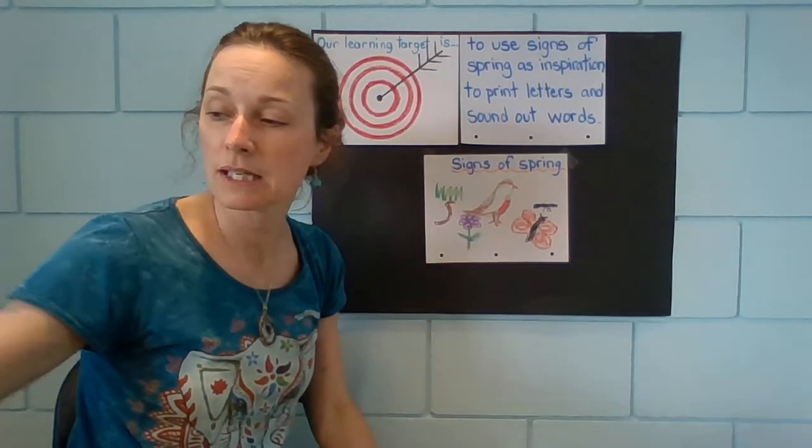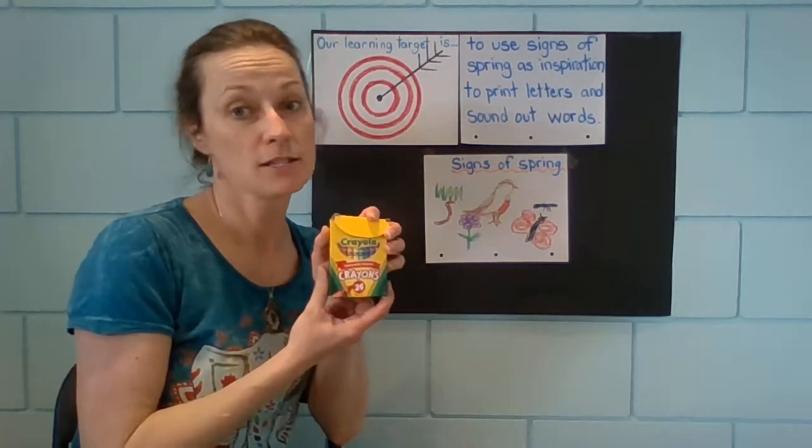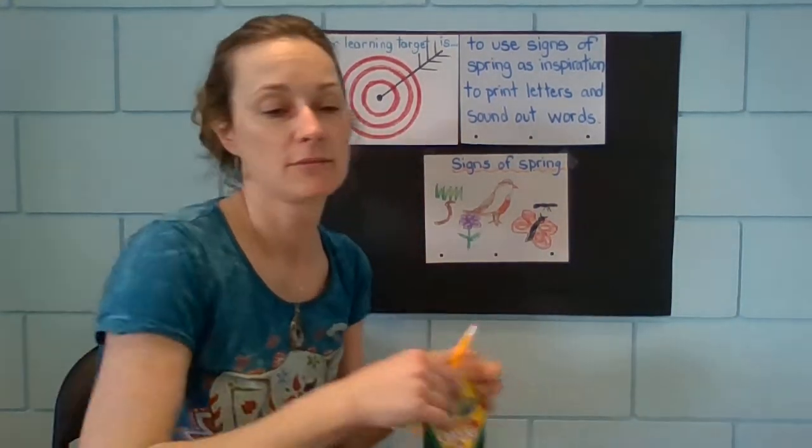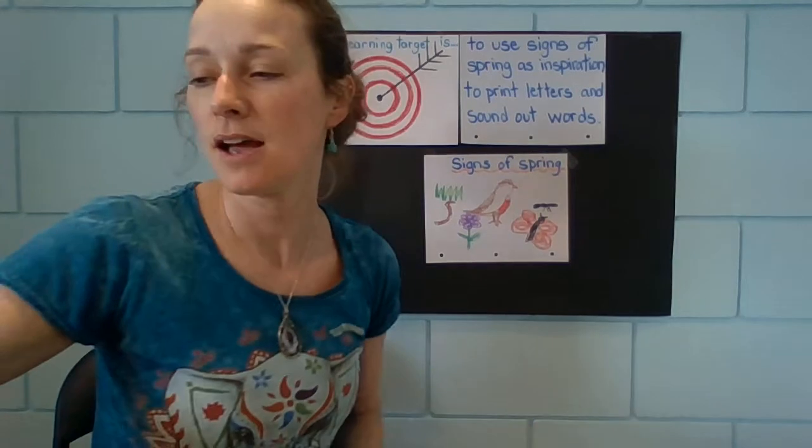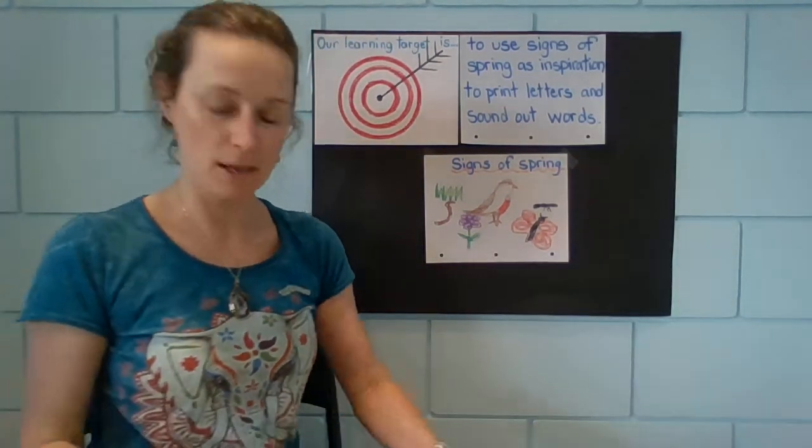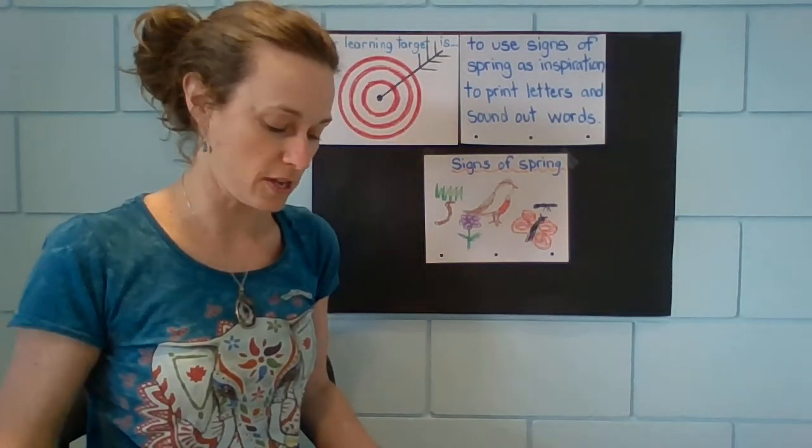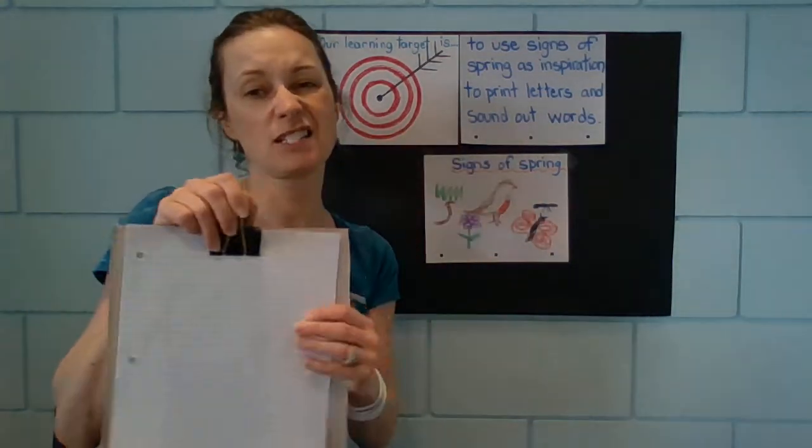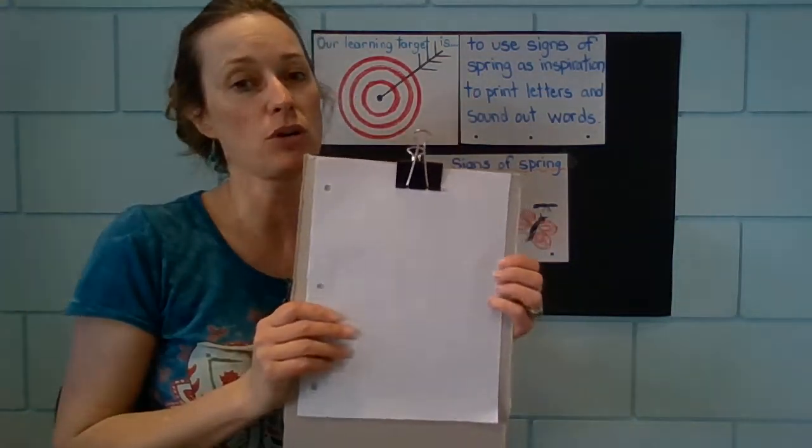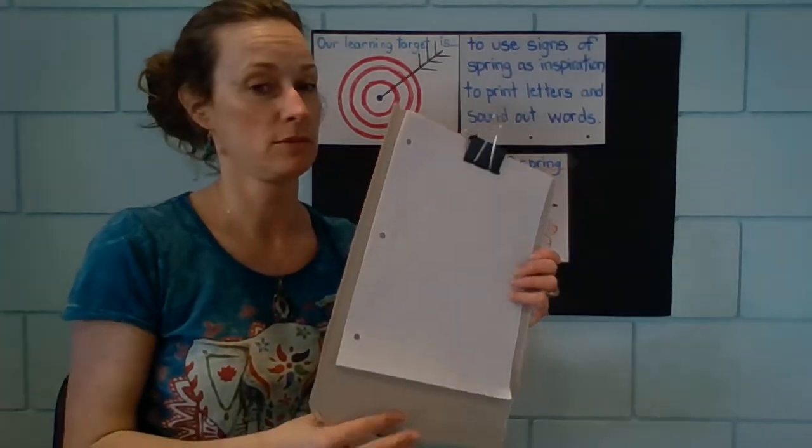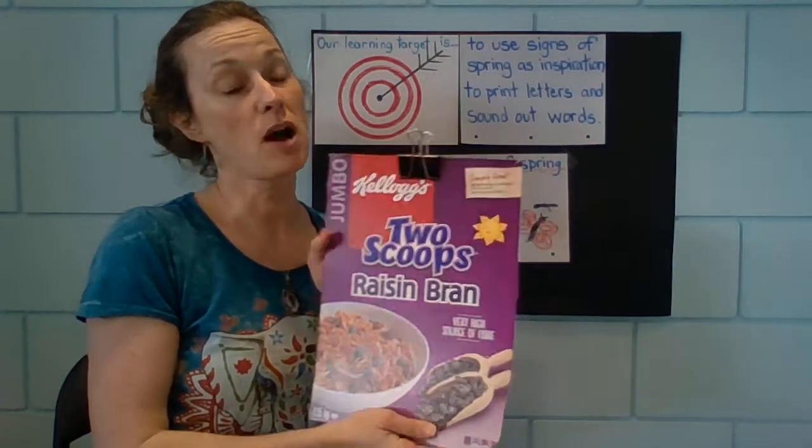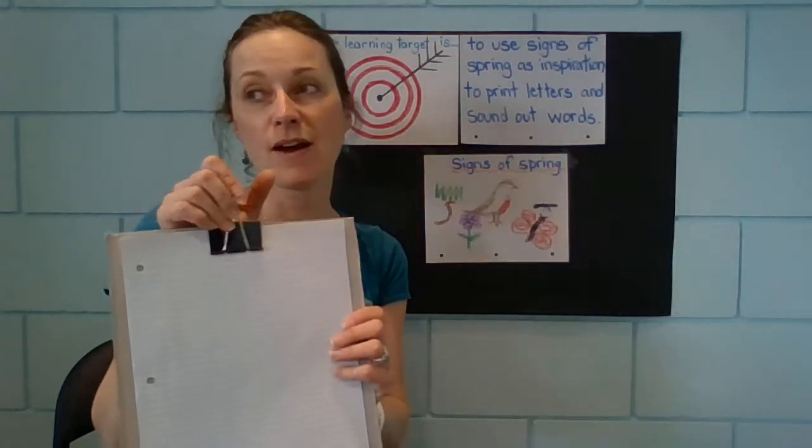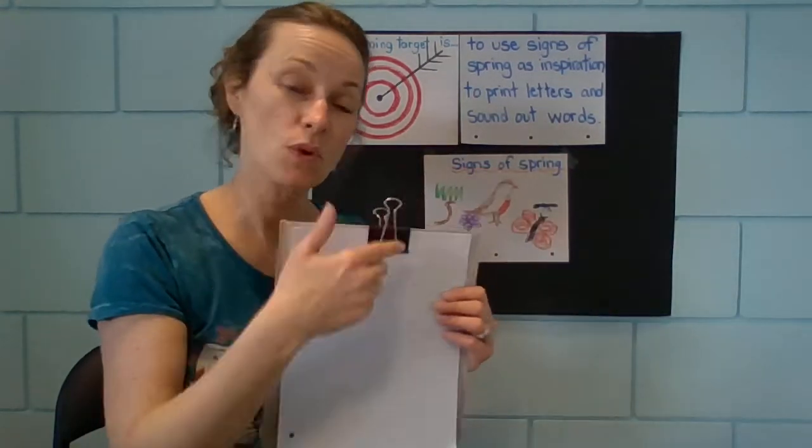So you are going to need some crayons, maybe a pencil. And you're going to need a piece of paper so you can draw the things that you see outside. And you're going to need some kind of clipboard. Now, I don't have a clipboard at home. My clipboards are at school. But I have a cereal box. So I cut the side of my cereal box off. And I found a bulldog clip or just tape.